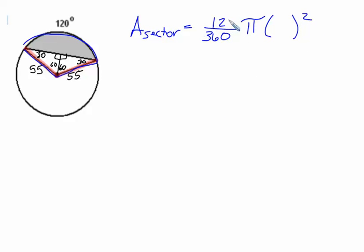In this case, it's 120 out of a full 360, times pi, times 55 squared. Now you can use your calculator to help, but we leave the answer in exact form, which means the pi remains there.